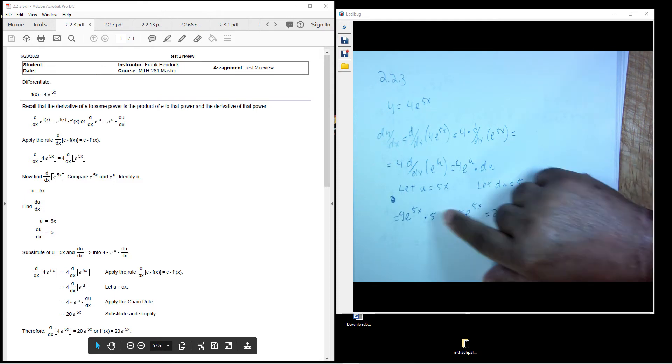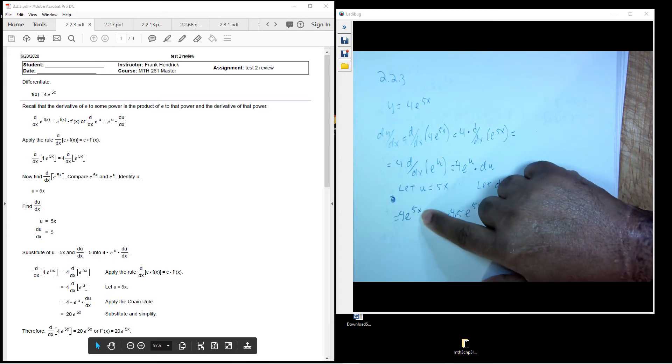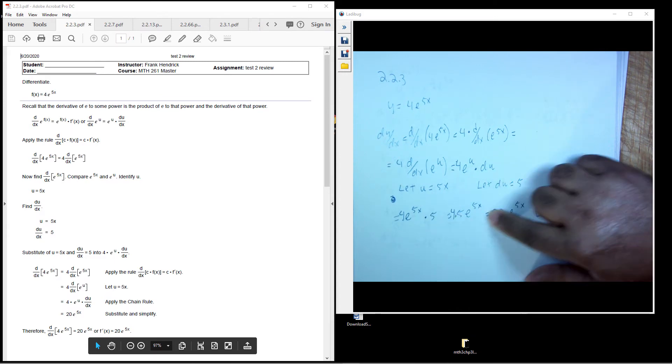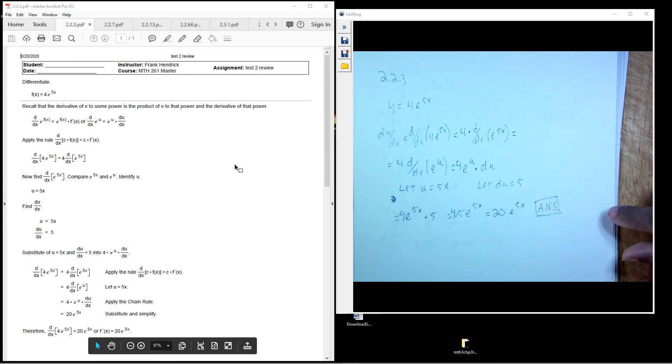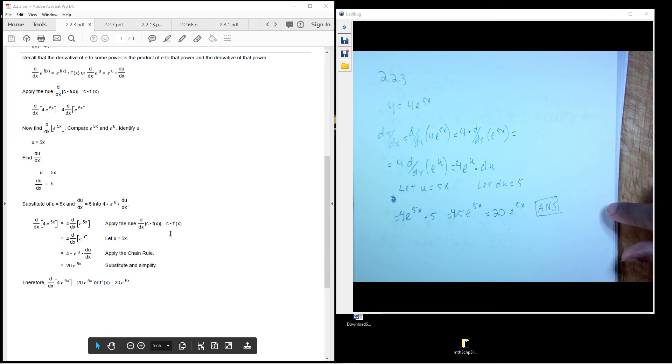So my derivative is going to be 4 times e to the 5x times 5. 4 times 5 is 20. So I have 20e to the 5x for my final answer there.